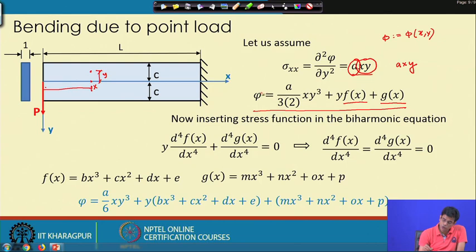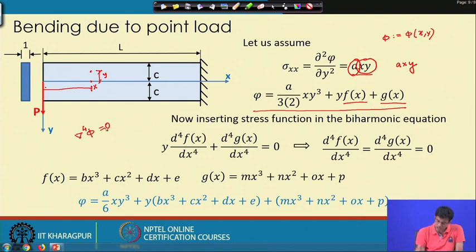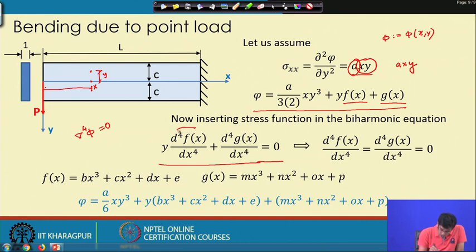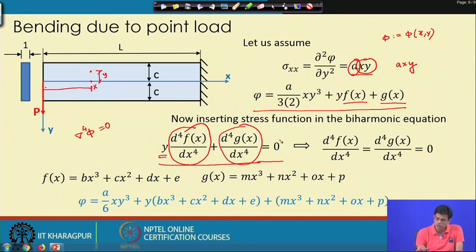Substituting this φ into the biharmonic equation ∇⁴φ = 0 leads to: y·(d⁴f/dx⁴) + (d⁴g/dx⁴) = 0. Since one term is multiplied by y and the other is purely x-dependent, each must independently equal zero.